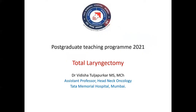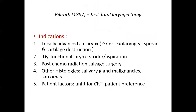The total laryngectomy was first described by Bill Roth in 1887, and even after 150 years and the era of organ preservation, it remains equally relevant as before. In the current era, the indications for total laryngectomy include locally advanced carcinoma of the larynx with gross exolaryngeal spread and cartilage destruction, presence of a dysfunctional larynx with aspiration, stridor, or prior tracheostomy.